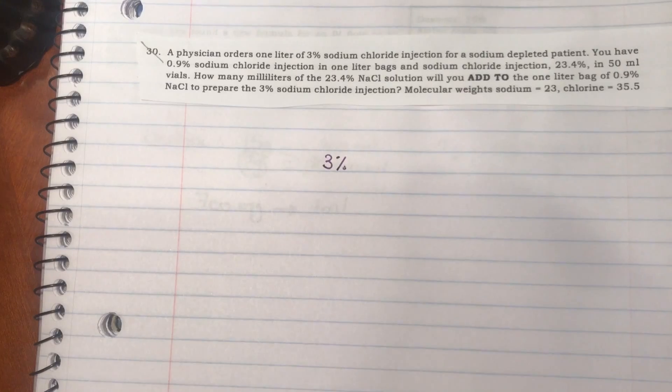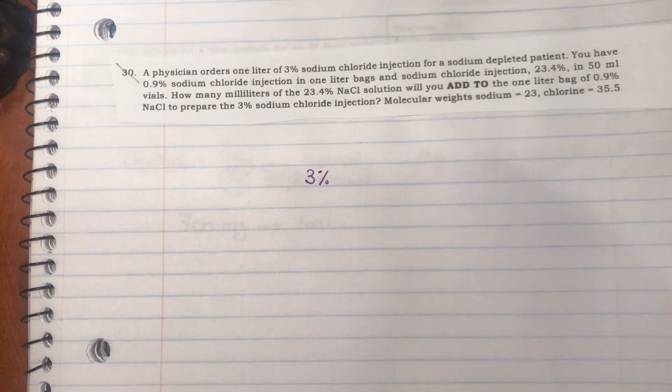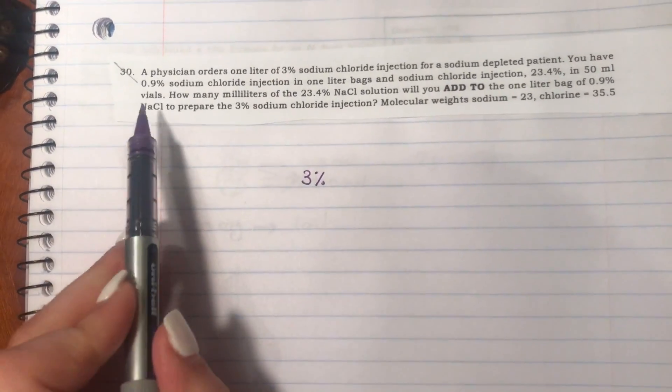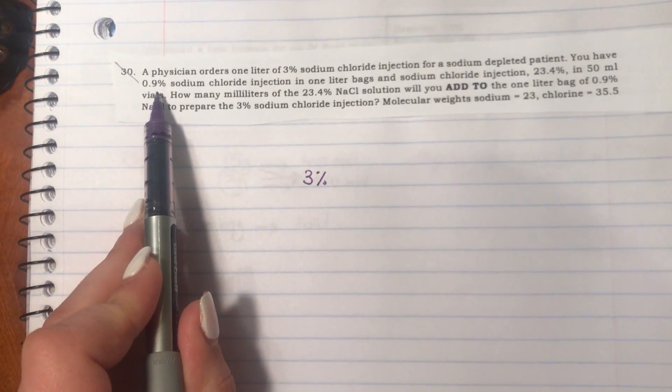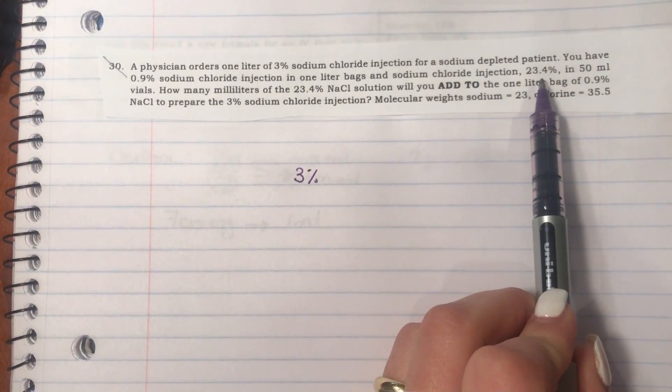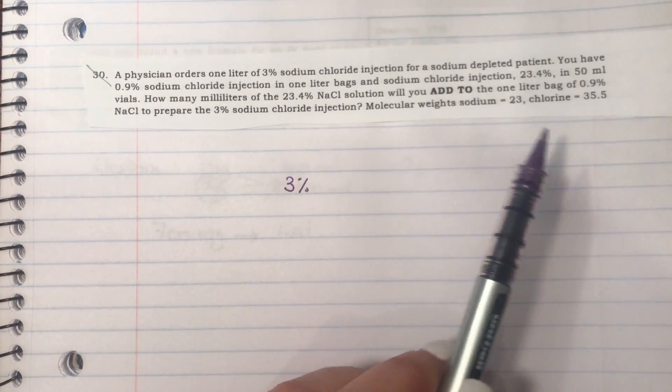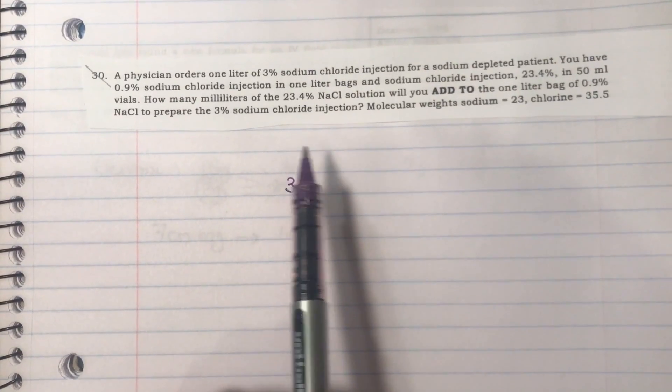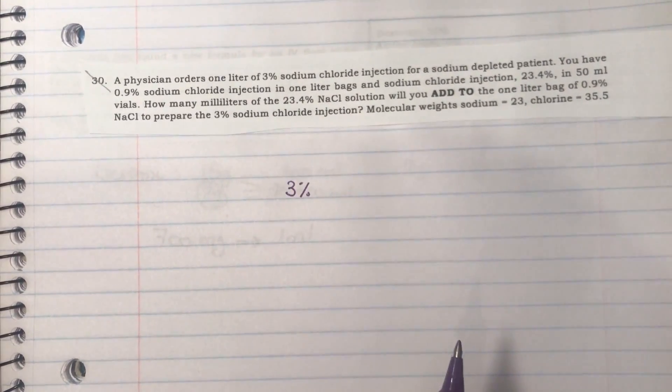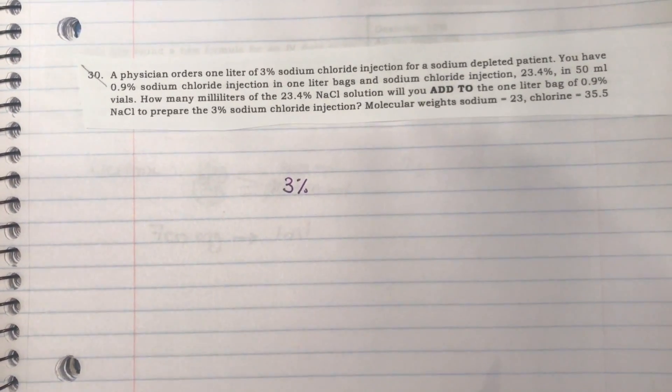Now you have two compounds with different percentages of the active ingredient, which is sodium chloride. You have normal saline at 0.9%, and you have sodium chloride 23.4% in 50 mL vials. You are required to calculate how many milliliters of the 23.4% you will need to add to the normal saline to get to the 3%.